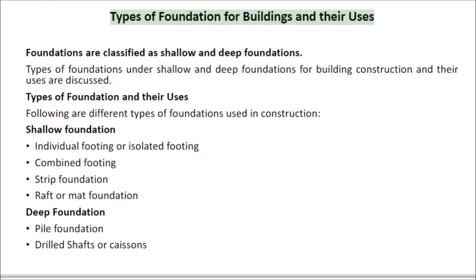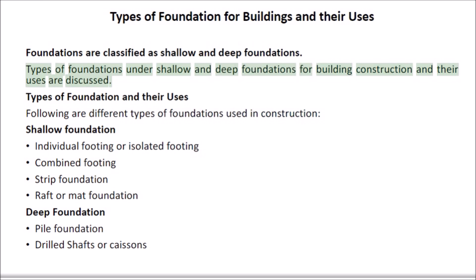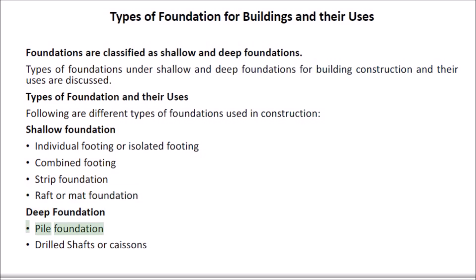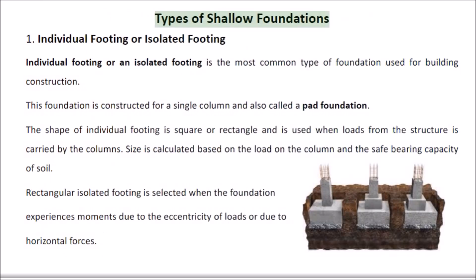Types of foundation for buildings and their uses: Foundations are classified as shallow and deep foundations. Types of shallow foundations include individual or isolated footing, combined footing, strip foundation, and raft or mat foundation. Types of deep foundations include pile foundation and drilled shafts or caissons.